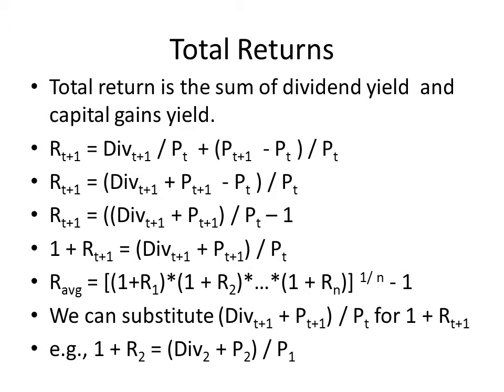Now, if we add 1 to both sides, then we get the fifth line, which is 1 + R sub t+1 equal to (Div t+1 + P t+1) divided by P sub t.